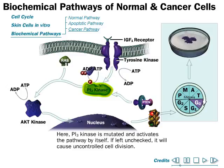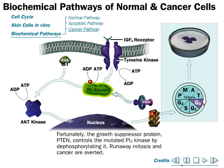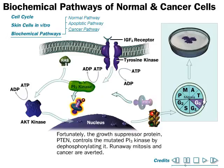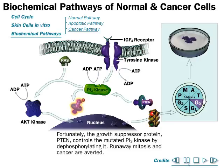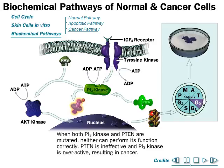Even if PI3 kinase is mutated and phosphorylates itself on its own, the tumor suppressor protein PTEN (p10) can still remove those phosphate groups from PI3 kinase, stopping the phosphorylation and preventing runaway mitosis and cancer. So p10 acts as a safeguard, not allowing the cell to become cancerous.